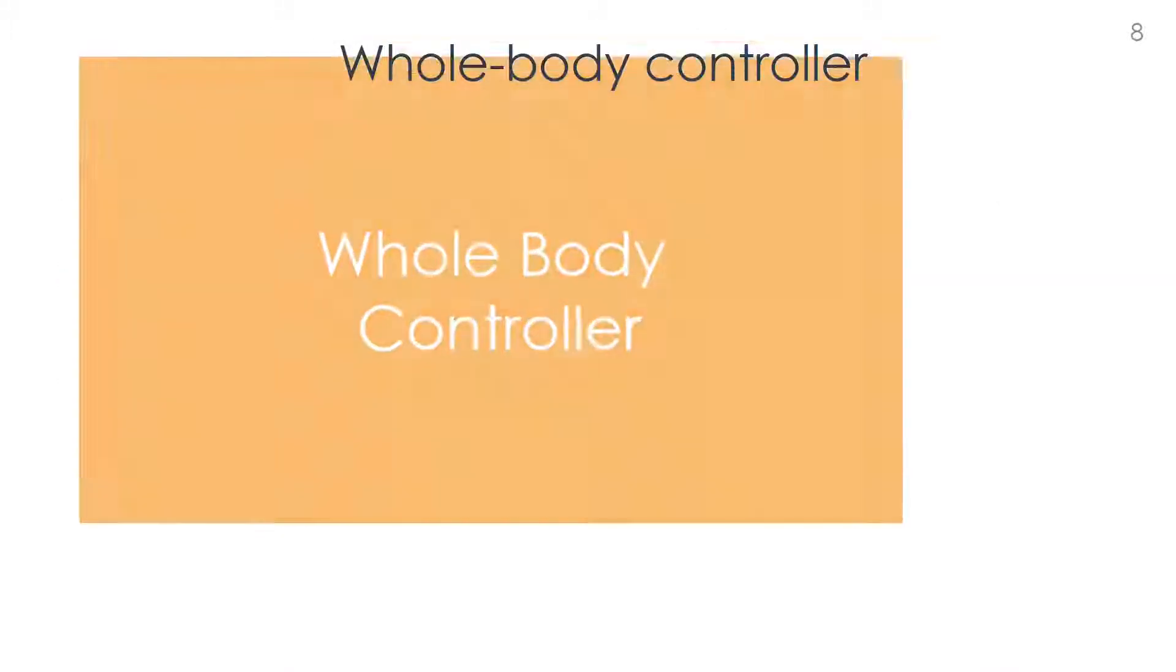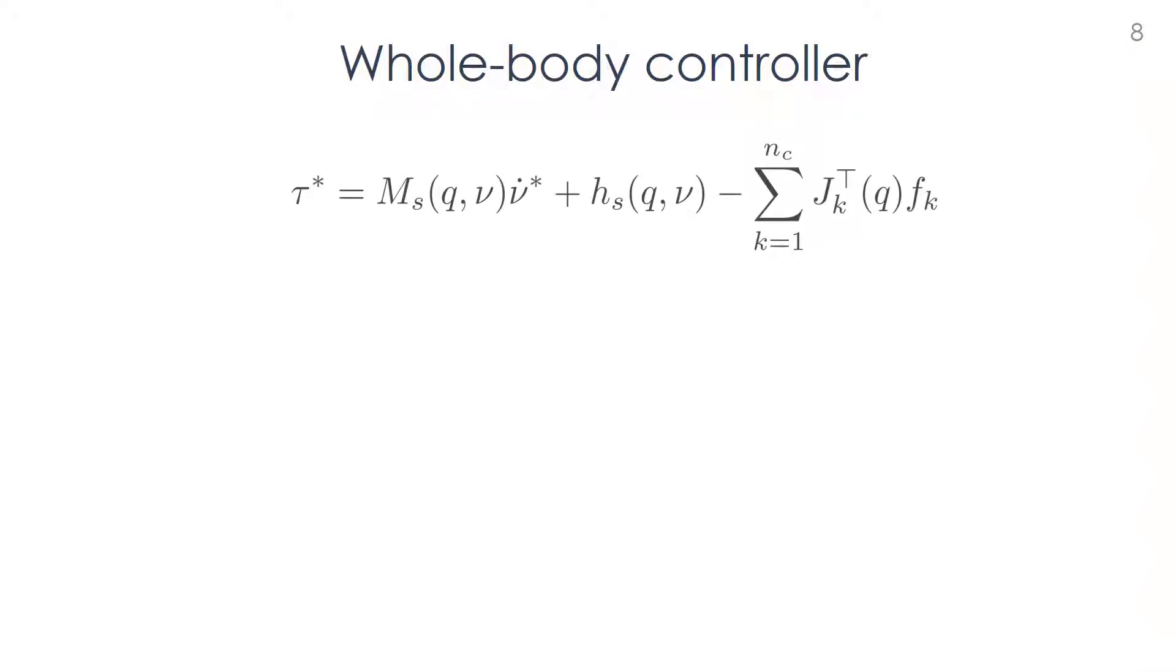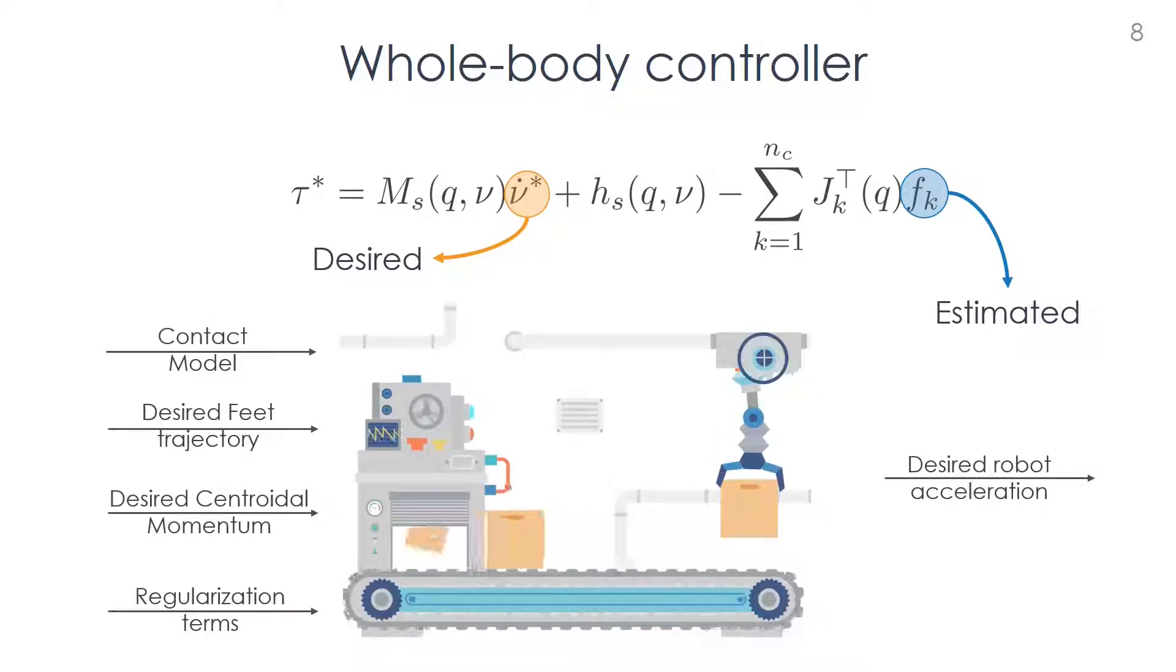The whole-body controller computes the desired joint torques using the robot joint dynamics, where the robot acceleration is set to the desired quantity and the contact wrenches are estimated. The desired generalized robot acceleration is chosen to track the centroidal momentum trajectory, the torso and the root link orientation, and the feet pose, while considering the contact model and the feasibility of the contact wrenches. The control problem is formulated using the stack-of-task approach.